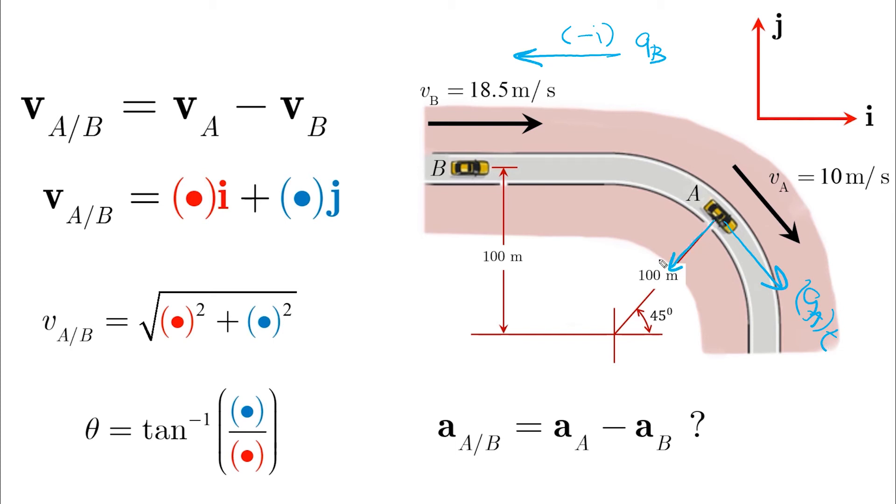And both components, the tangential a and normal a, each one of them will have two components.